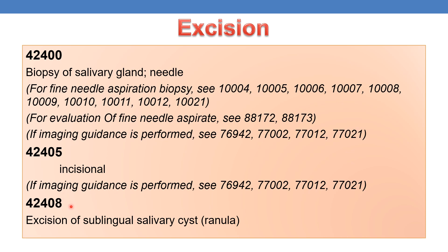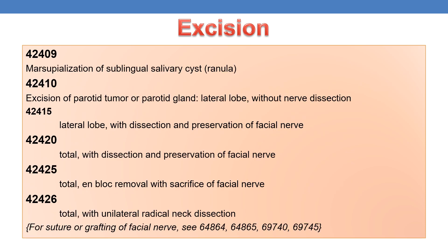CPT 42408 deals with excision of sublingual salivary cyst, also known as ranula. CPT 42409 deals with marsupialization of sublingual salivary cyst. CPT 42410 deals with excision of parotid tumor or parotid gland lateral lobe without nerve dissection. CPT 42415 deals with excision of parotid tumor or parotid gland lateral lobe with dissection and preservation of facial nerve.